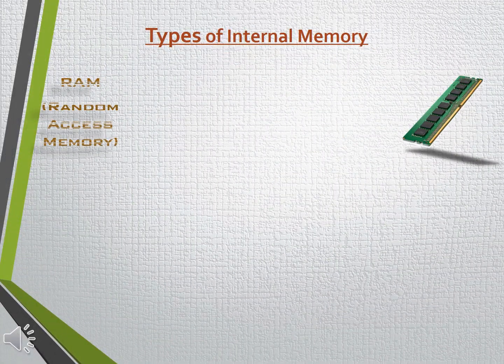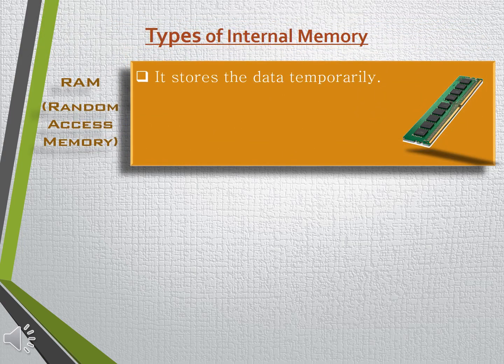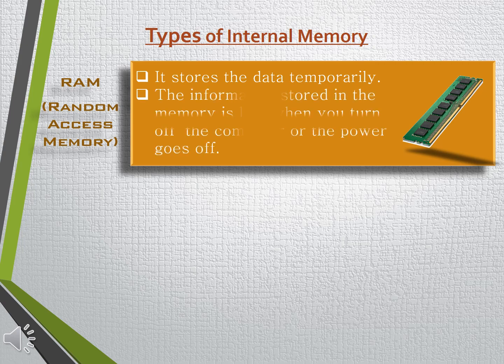RAM stands for Random Access Memory. It stores data temporarily and works like a blackboard that can be constantly overwritten with new data. Once the data is written on the memory, it can be changed according to needs. The information stored in RAM is lost when you switch off your computer. For example, it is like a calculator where information exists only while the calculator is on — the moment you turn it off, all the data disappears.